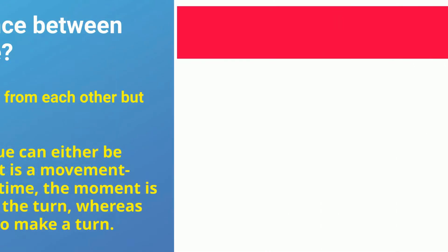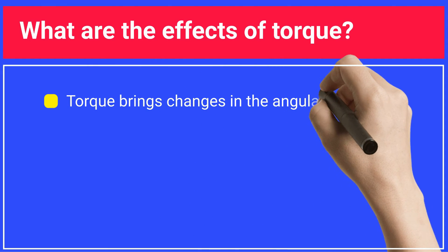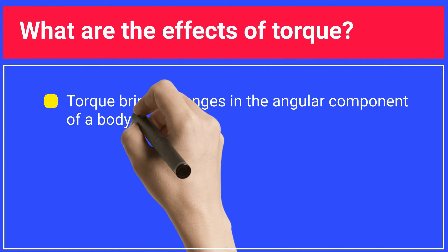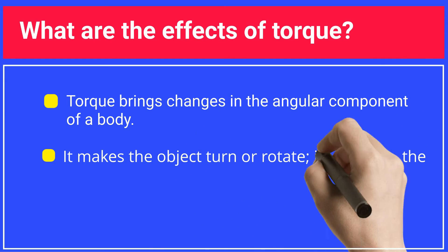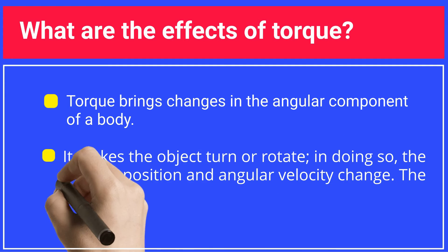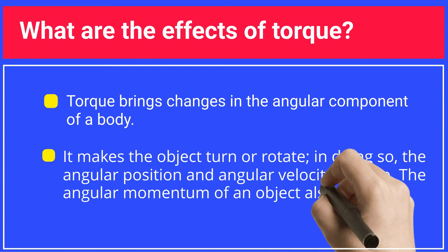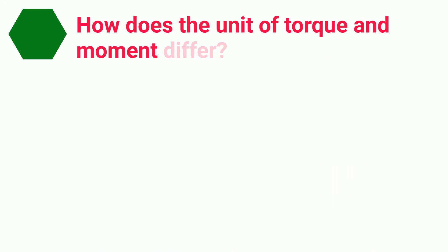What are the effects of torque? Torque brings changes in the angular component of a body. It makes the object turn or rotate. In doing so, the angular position and angular velocity change. The angular momentum of an object also varies with the torque.